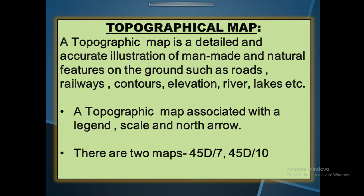A topographical map is associated with a legend, which includes: number 1 — index; number 2 — scale; and number 3 — north arrow. Without direction, we cannot find any location or features. There are two maps for the ICSE board exam: 45D/7 and 45D/10. Any one of these two maps will come in the board exam.